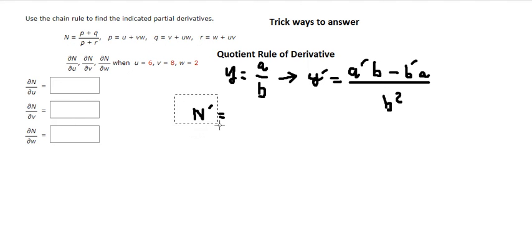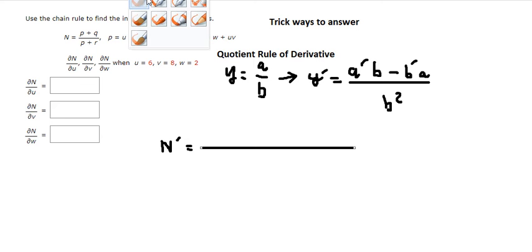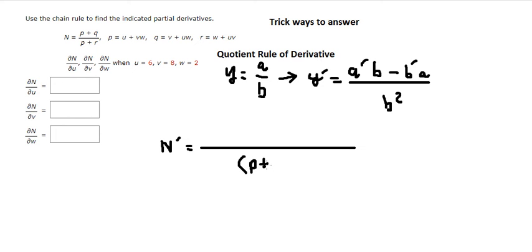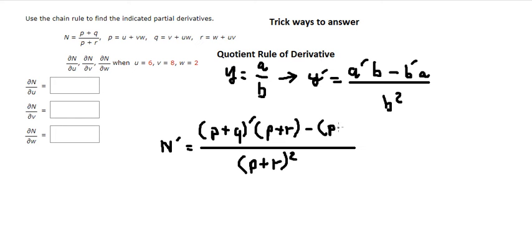If we apply this for capital N, it should look like this — b plus r to the power of 2. And we have the first derivative of b plus q multiplied by b plus r, minus the first derivative of b plus r multiplied by b plus q.